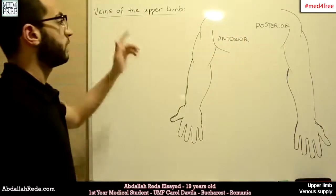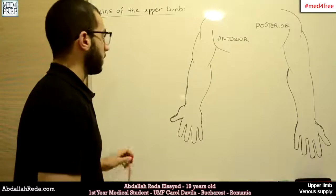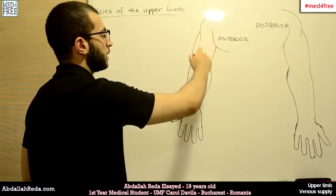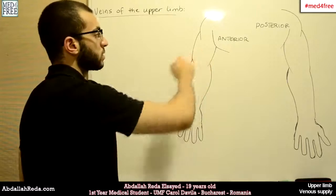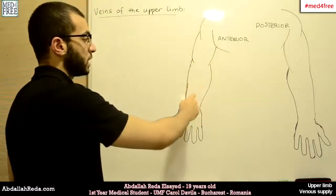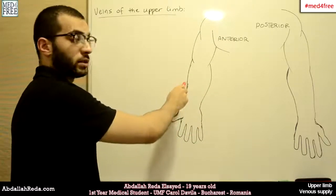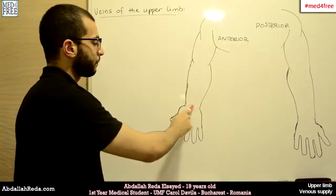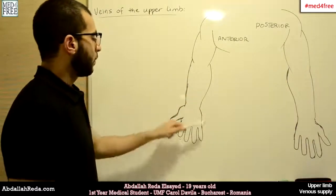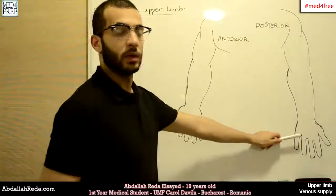This time we're going to talk about the veins of the upper limb. Last time we talked about the arteries of the upper limb. They begin with the axillary artery that goes through the axilla, and when the same artery arrives at the brachial region it's called the brachial artery. Then it branches into the ulnar branch on the medial side and a radial branch on the lateral side, and they anastomose at the wrist to form networks on the palmar and dorsal sides of the hand.